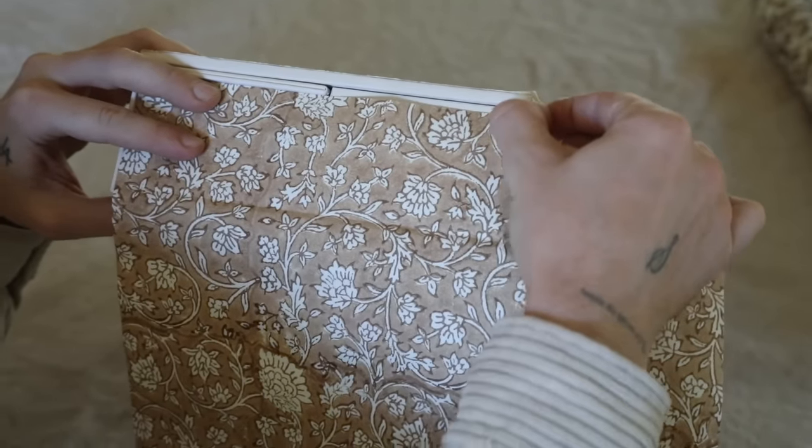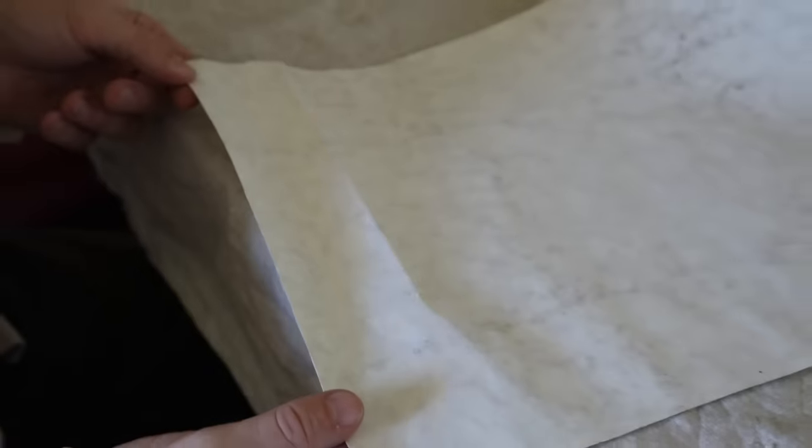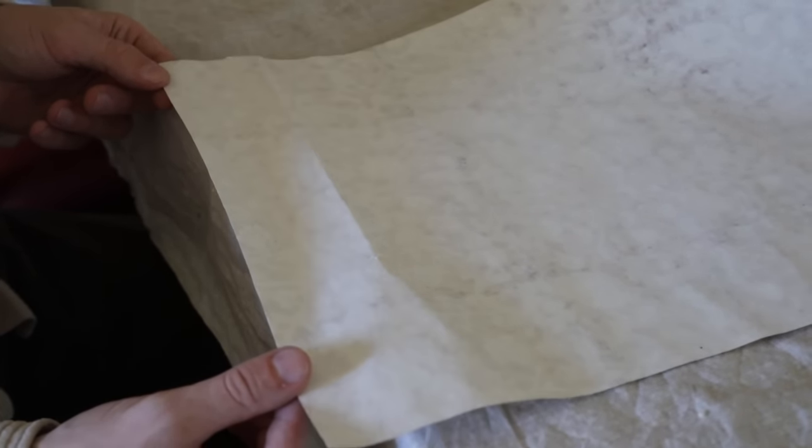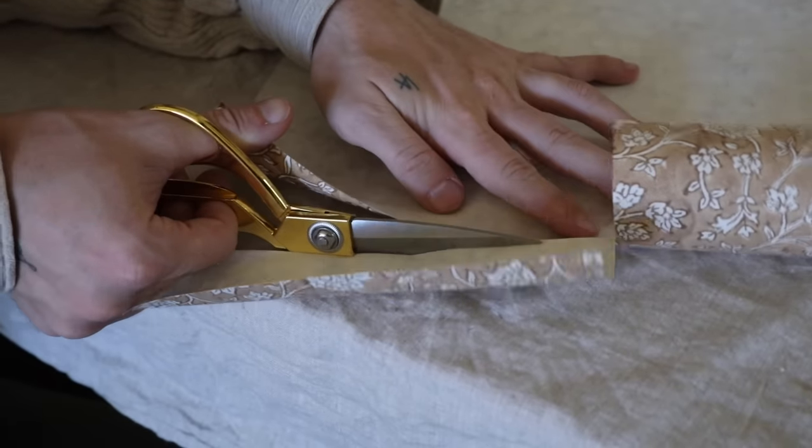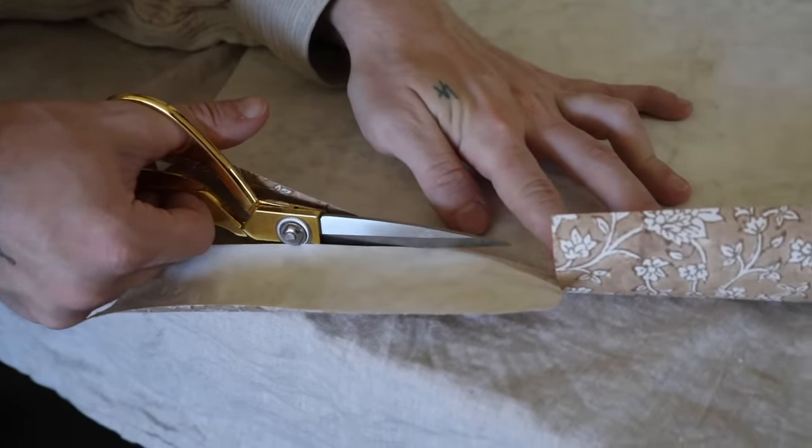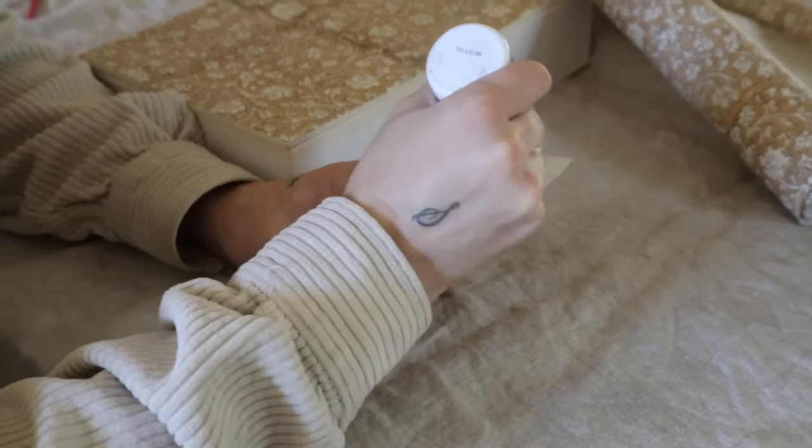You're going to want to make sure to get this on every single element of the paper so it doesn't start to ripple or budge. I applied this on the outside of my entire box and pressed down my wrapping paper, making sure it was nice and smooth.